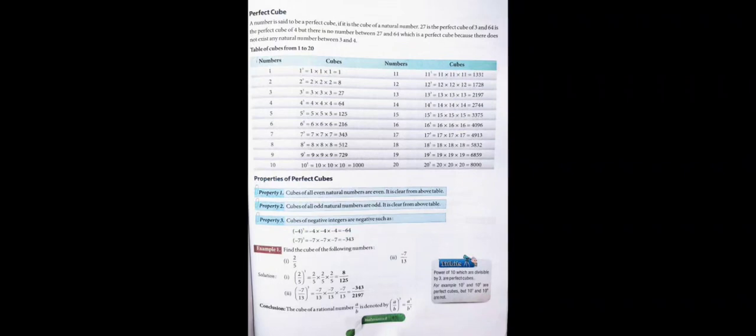Now, what is a perfect cube? A perfect cube is said to be a perfect cube if it is the cube of a natural number. For example, 27 is the perfect cube of 3, and 64 is the perfect cube of 4. But there is no number between 27 and 64 which is a perfect cube, because there does not exist any natural number between 3 and 4.